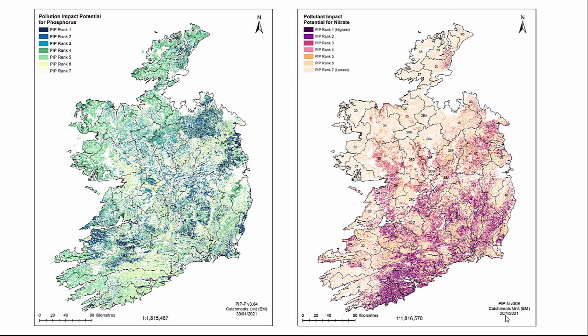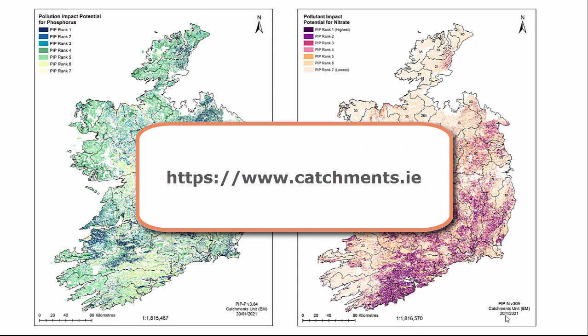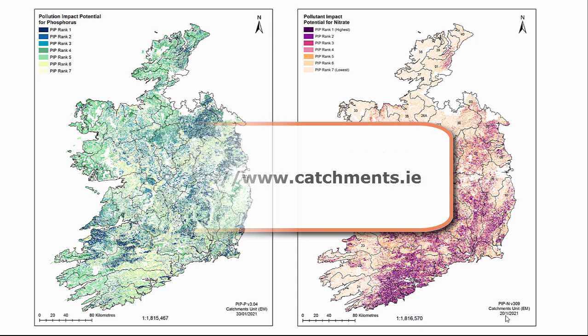Pollution Impact Potential or PIP maps have been produced to help show the highest risk areas for losses of nitrate and phosphorus to waters from agricultural land. It can be seen as a support tool to show where best to target these high risk areas for further investigation and to identify the right measure in the right place. The PIP maps can be found at catchments.ie.